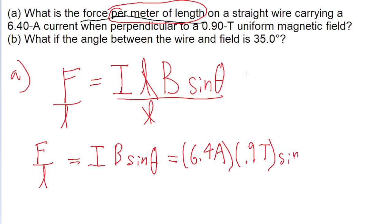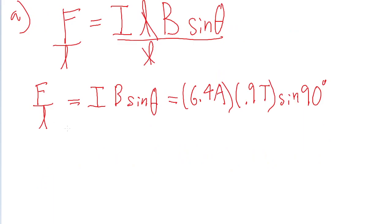and we're told that it's perpendicular. The current is perpendicular to the uniform magnetic field. So that means that our angle theta is 90 degrees. So if we put that into a calculator, then we'll find a force per meter of length of 5.8 newtons per meter. So that is the answer to part A.